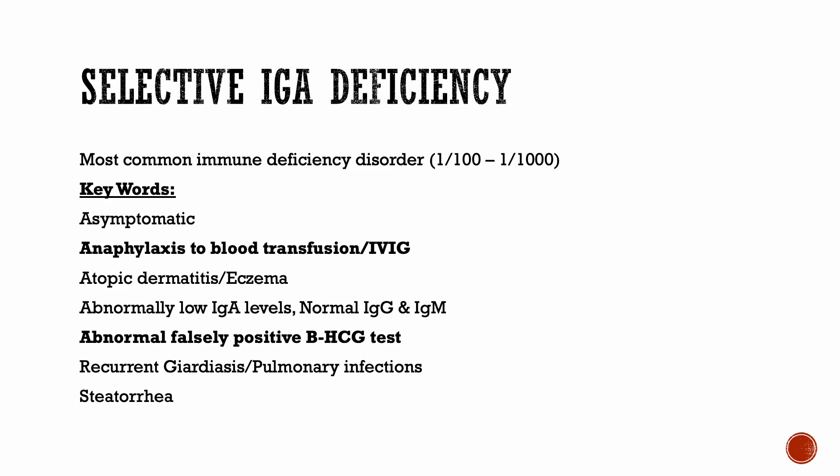What is selective IgA deficiency? It is one of the most common immune deficiency disorders which may go unnoticed, with a frequency of 1 in 100 — some authors even report 1 in 1000. Patients may remain asymptomatic, so there may be no history. Anytime you see anaphylaxis to blood products or IV immunoglobulins, think of selective IgA deficiency. There may be an association with atopic dermatitis or eczema, where patients have low IgA levels and normal immunoglobulin G and M.